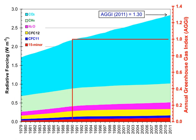Water vapor accounts for the largest percentage of the greenhouse effect — between 36% and 66% for clear sky conditions, and between 66% and 85% when including clouds. Water vapor concentrations fluctuate regionally, but human activity does not directly affect water vapor concentrations except at local scales, such as near irrigated fields. Indirectly, human activity that increases global temperatures will increase water vapor concentrations, a process known as water vapor feedback. The atmospheric concentration of water vapor depends largely on temperature, ranging from less than 0.01% in extremely cold regions up to 3% by mass in saturated air at about 32 degrees Celsius.